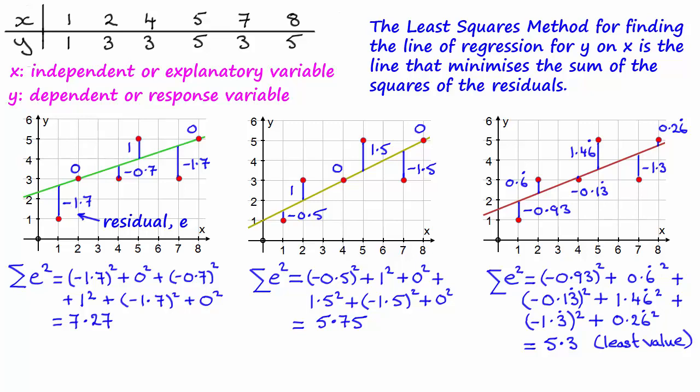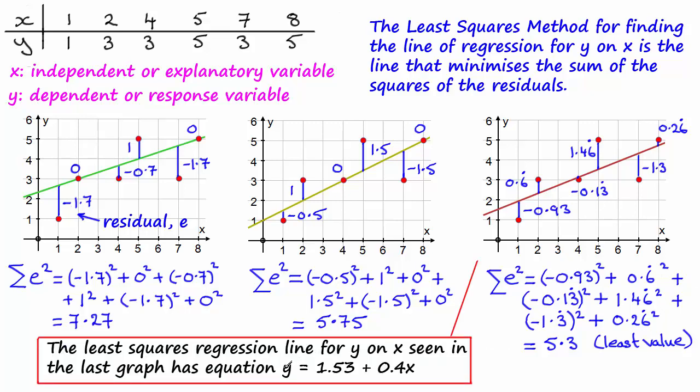Now based on the least value, it's possible to work out what the regression line is for y on x. It turns out to be this line here: y equals 1.53 plus 0.4x.